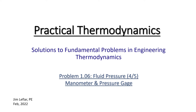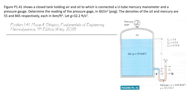Let's look at a more complex problem involving the pressure created by columns of fluid. In this situation, we're going to have a pressure gauge and a manometer. We have a closed tank holding air and oil — air over oil — and that tank is connected to a mercury manometer.